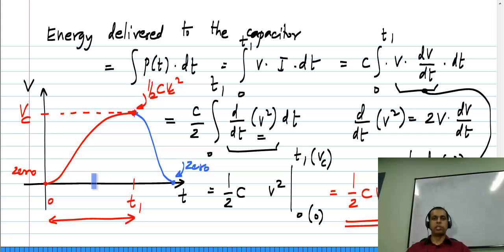A capacitor stores energy, unlike a resistor which dissipates the energy delivered to it. The net energy delivered to the capacitor is always positive: starting from 0 volts, whatever way you change the voltage to Vc, the energy delivered is half C Vc squared, which is positive because of the square term. Once a capacitor is charged to some voltage you can have it deliver energy to the rest of the circuit, but starting from 0 volts it always absorbs energy — a capacitor is a passive element.